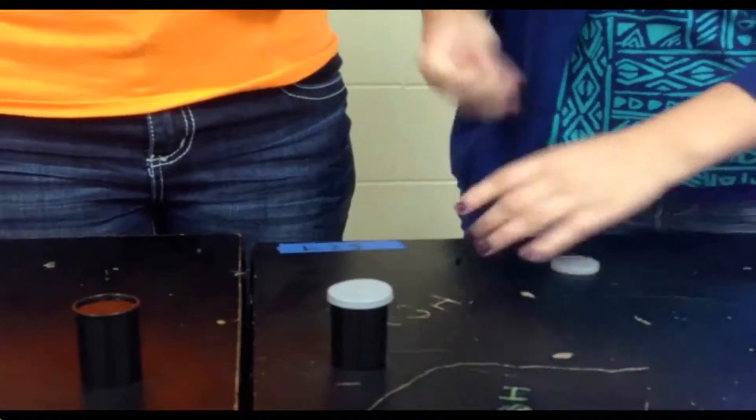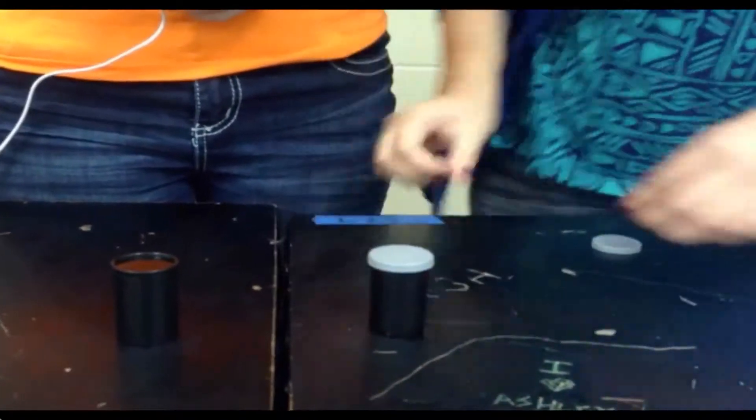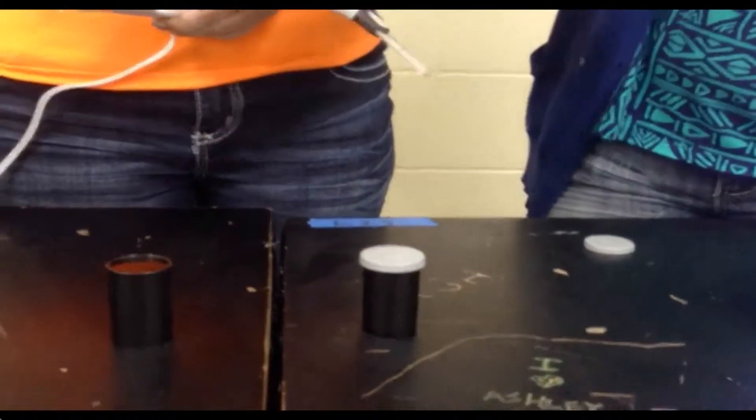Next, fill your two film canisters with the same amount of weight and cut two pieces of equal string to glue to the center.